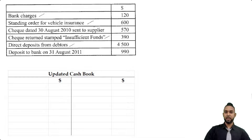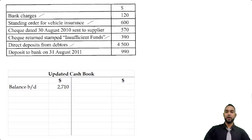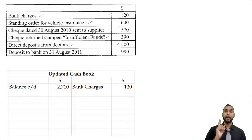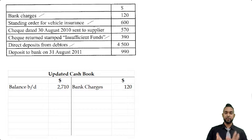Let's open up our updated cash book and put in our balance of $2,710 that we just found. Bank charges are amounts the bank charges us for upkeeping our account or for transactions they execute for us — that's a payment, a decrease, going on the credit side of the cash book. If you have no clue how to do bank reconciliation or how to update cash books, I'm going to put a card up there and a link in the description below to my bank rec playlist. Be sure to check it out if needed and then come back to see this question's solution.